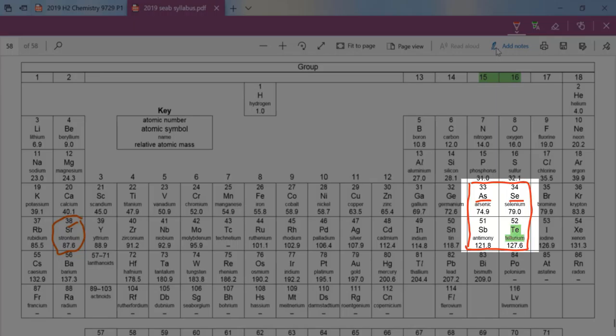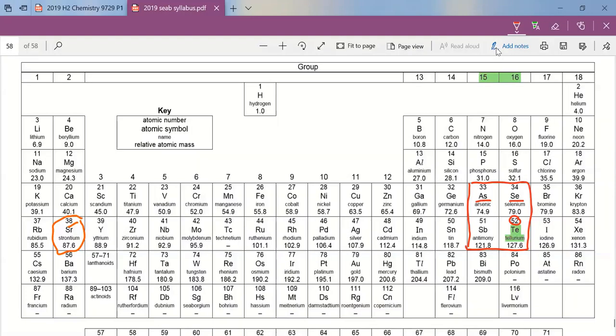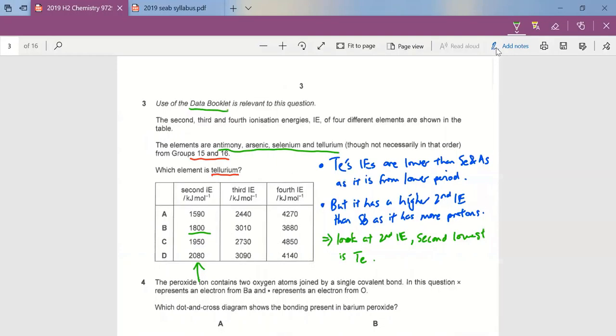The next thing we need to take note is that antimony and tellurium are actually in the same period. So tellurium, by virtue of having one more proton, will have a greater nuclear charge, which means it probably has a higher second IE. Also take note that the anomaly between group 15 and 16 is for first IE, so it doesn't apply for the second IE.